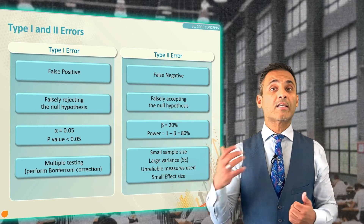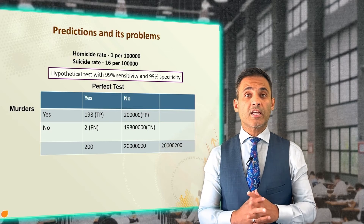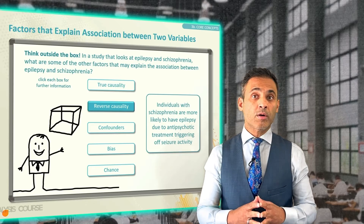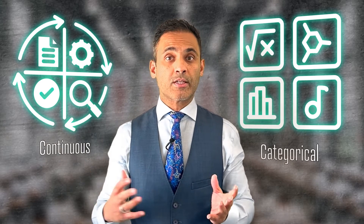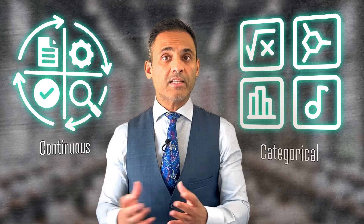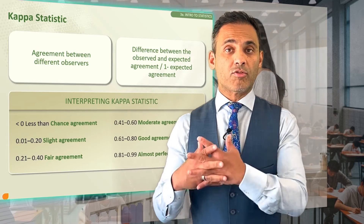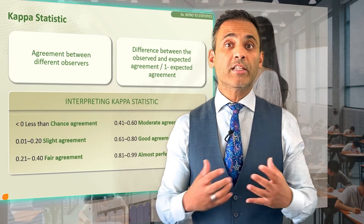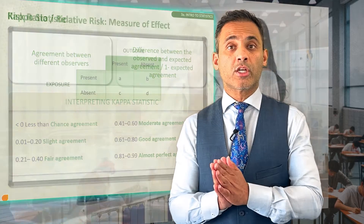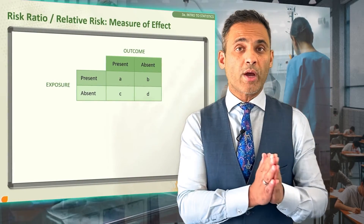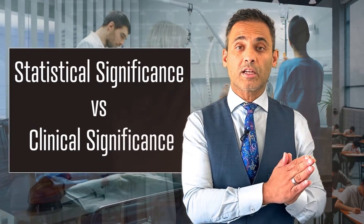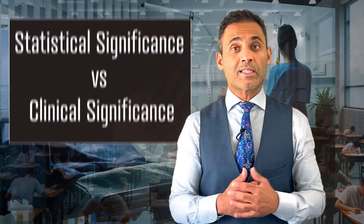The exam further asks you about type 1 error and type 2 error, and examines your understanding of the application of statistical tests for two groups or multiple groups, and understanding which test to apply for continuous data versus categorical data. The reason they test this is so that when you're reading papers in the future, you're able to appraise studies in relation to their methodology and how confidently you can apply the results to your clinical practice — and that's really valuable for our patients. They will also test your knowledge about statistical significance and whether you're able to differentiate it from clinical significance, including understanding of p-values and confidence intervals.